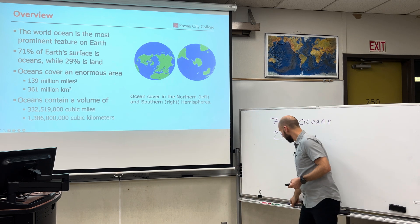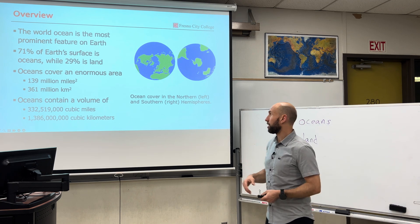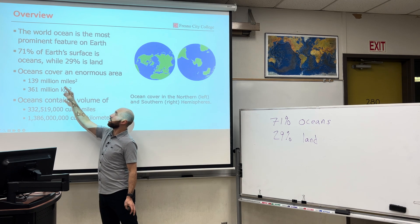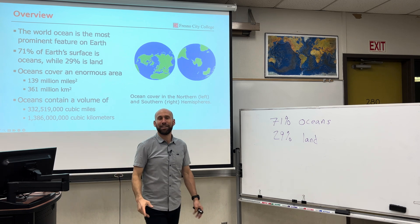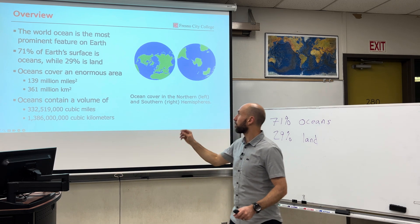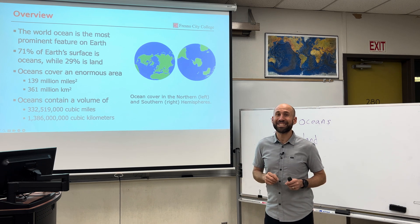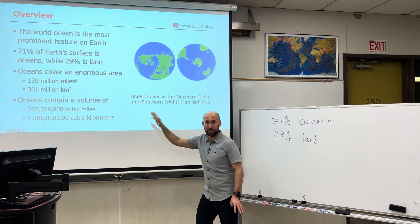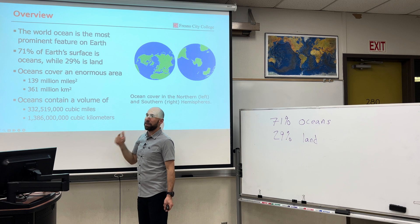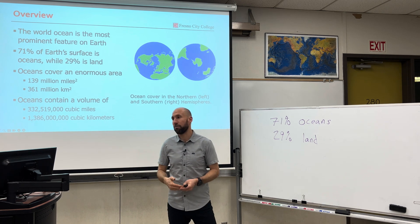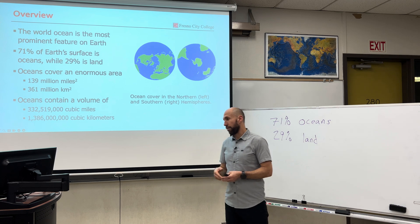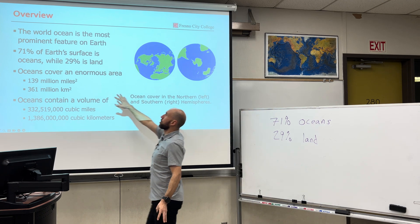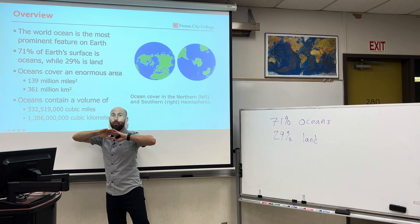So that means there is more water covering the surface of the earth than there is land. You think about how big your city is — maybe about 25 square miles — we're talking 139 million square miles. Whoa.